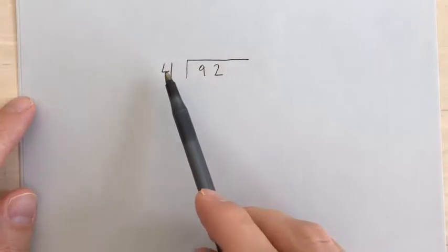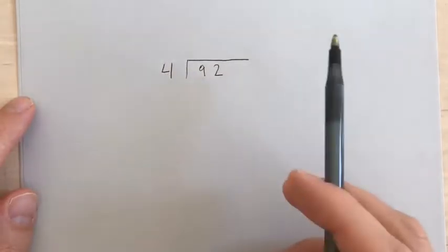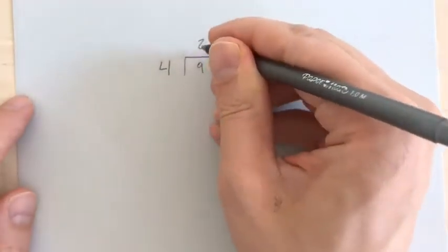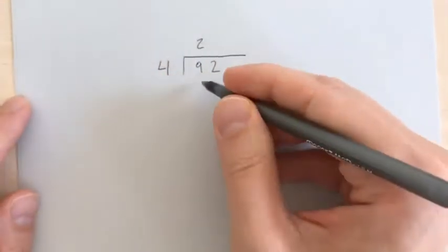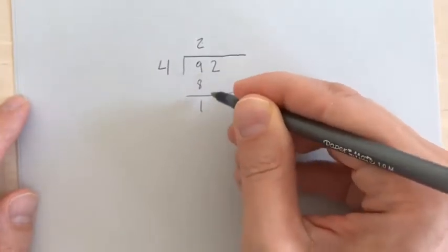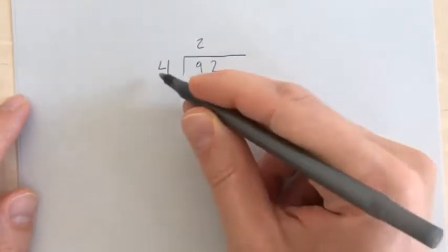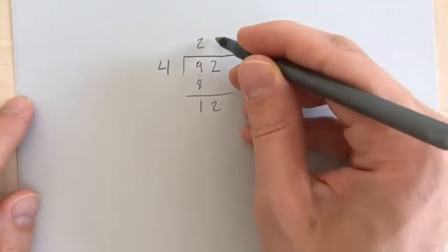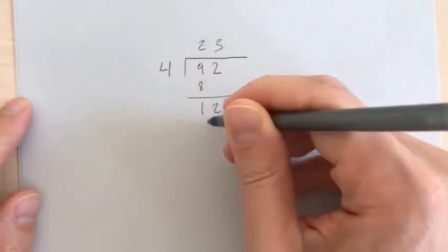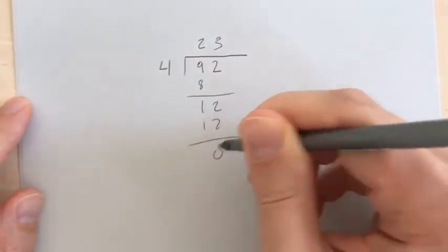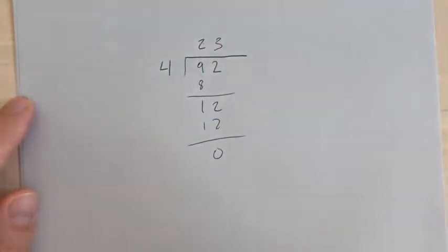So how many times does 4 go into 9? 2. So 2 times 4, that's 8. 9 minus 8 is 1. Drop down the 2. 4 goes into 12 three times. 3 times 4 is 12, you get a remainder of 0.